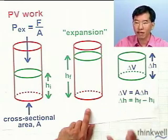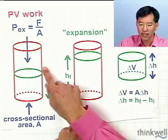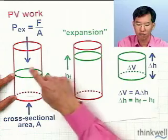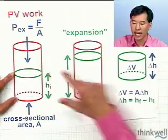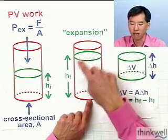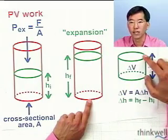If you think about it a little bit more, you'll realize that the difference in volume between what was contained here by the piston in this position and what is contained here with the piston at a greater height is a change in volume. And that change in volume is the cross-sectional area times the change in height.